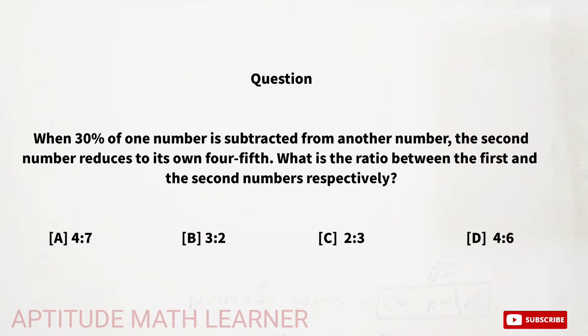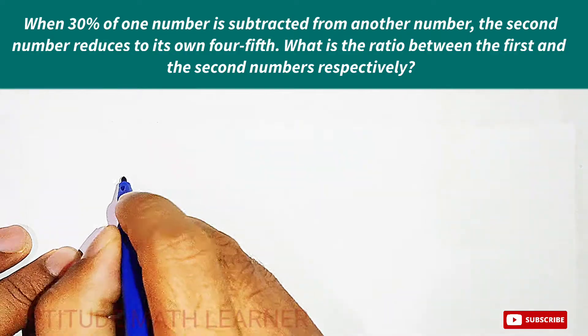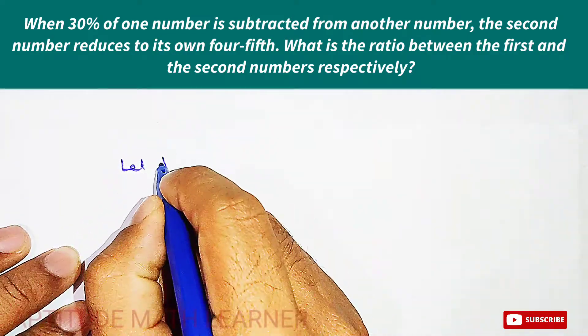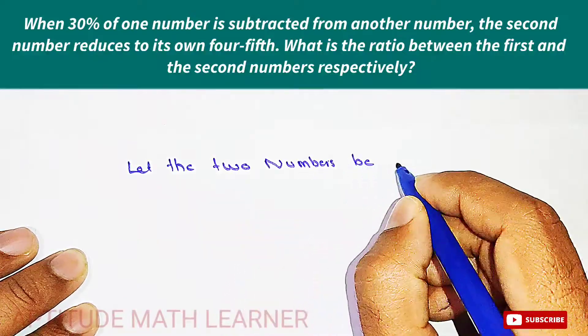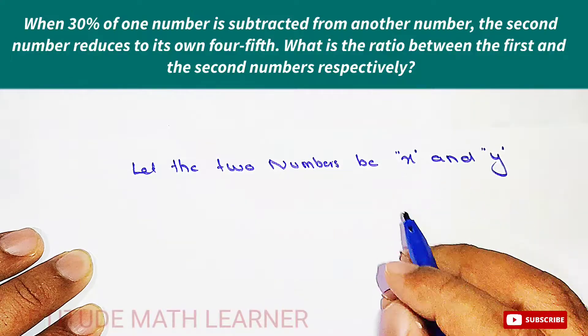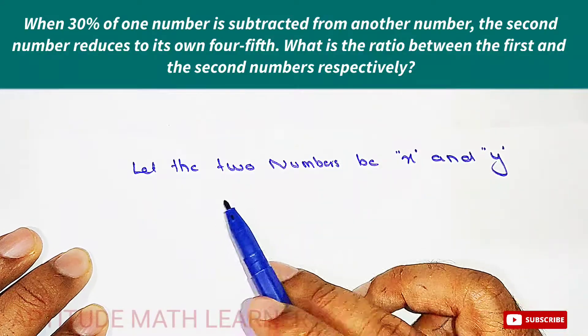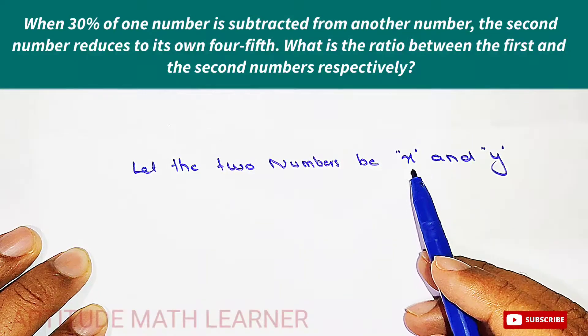For this we take, let the two numbers be x and y. So here we have just taken the two numbers, x and y. The first number is x and the second number is y.